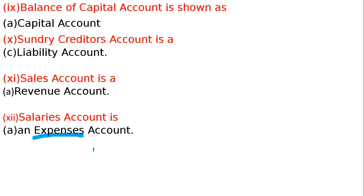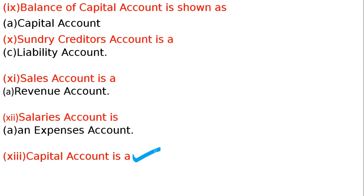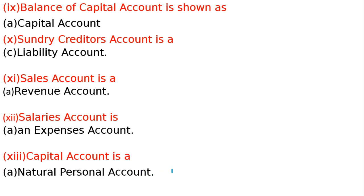13th question: Capital account is which type of account? From the four alternatives, it is a natural personal account. Insan ek Bhagwan ka banaya hua person hai, so natural personal account hota hai. Artificial personal account alag hota hai. Capital account is a natural personal account — ise dhyan se yaad karo, yeh life mein bahut kaam aane wala hai.